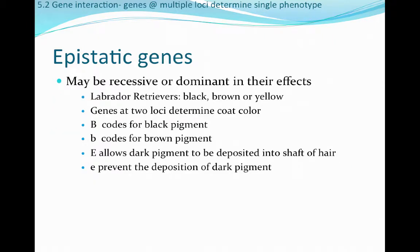Epistatic genes are most clearly visualized with Labrador retrievers. Labs can be black, brown, or yellow, and the expression of that phenotype is informed by two different genes at two different loci. The big B allele codes for black pigment and little b codes for brown pigment at the first locus. At the second locus, big E allows dark pigment to be deposited in the hair shaft, whereas little e prevents deposition of dark pigment in the hair follicle.